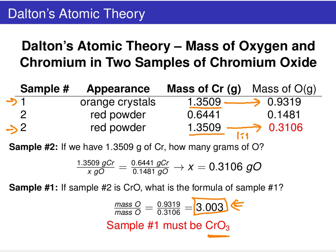That was the final sort of evidence Dalton would put together. He did this for many different types of compounds and always found that these atoms show up in roughly whole number ratios. So we've got roughly whole number ratios showing up consistently.